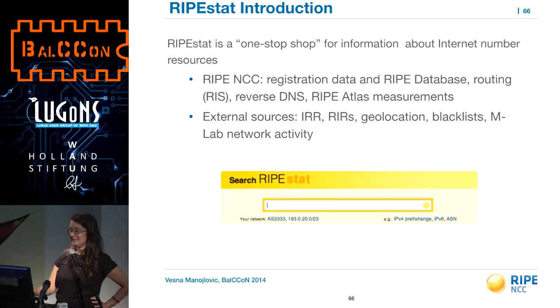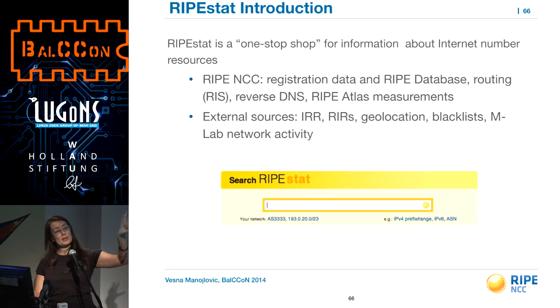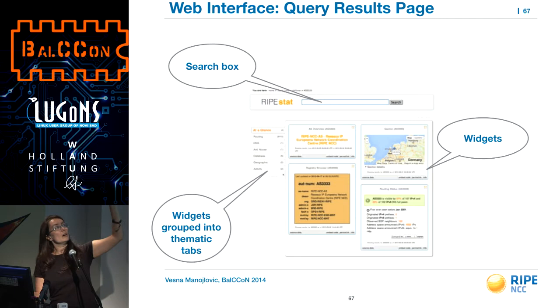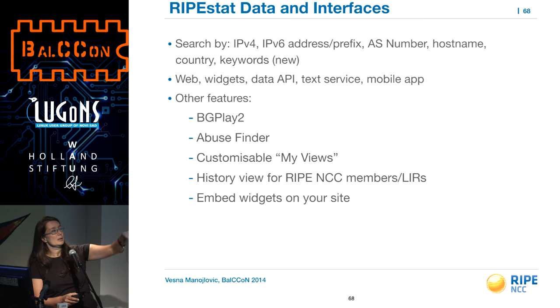The other thing I wanted to show is RIPEstat. How many of you have heard of RIPEstat? That's also very interesting — it's a lot of information out there, and we have created one interface for all of it at stat.ripe.net. It's a portal to the routing information we collect through RIS — Routing Information Service — our reverse DNS data, Atlas, RIPE database, everything. When you query for something, like our AS number, it shows you a few things, and then there's a routing tab with nine widgets, DNS tab, anti-abuse, database, geo, and activity.